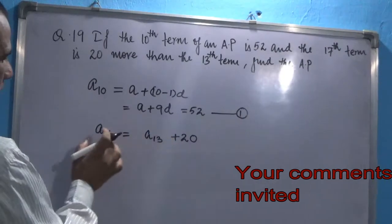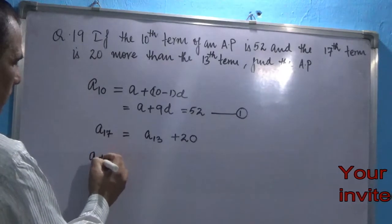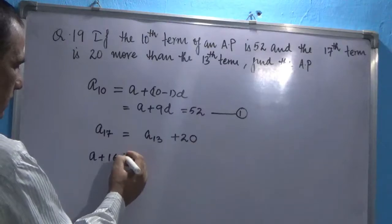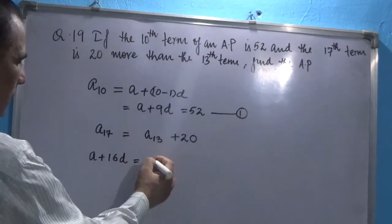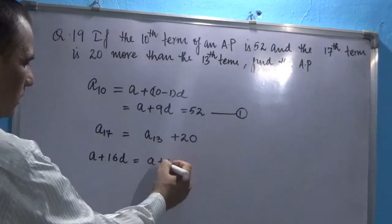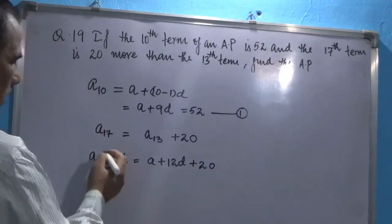Again, we can put the values of this A17 and A13, which will be nothing but A plus 17 minus 1, that is 16D, and here A plus 13 minus 1, that is 12D, plus 20.